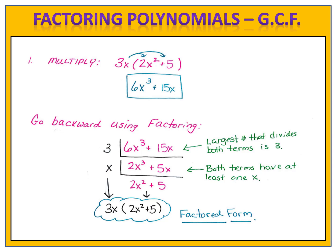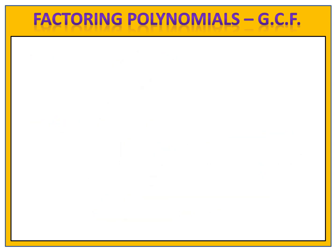We now take the outside value 3x and the inside value 2x squared plus 5, and we rewrite them as 3x times 2x squared plus 5. This is the factored form of the polynomial, and this is how we factor polynomials using greatest common factor. Let's take a look at a few examples.